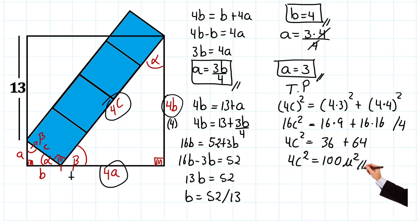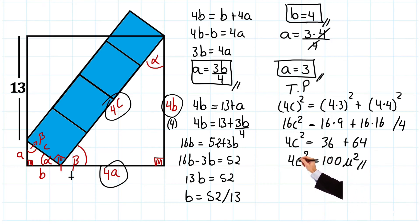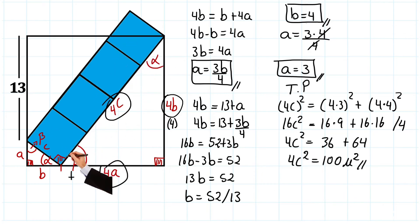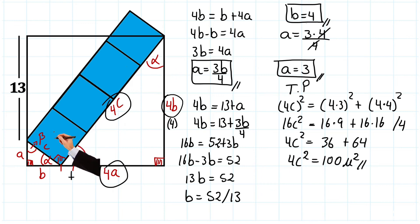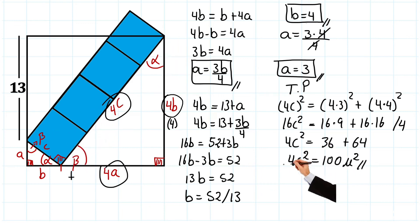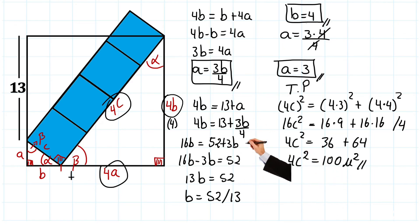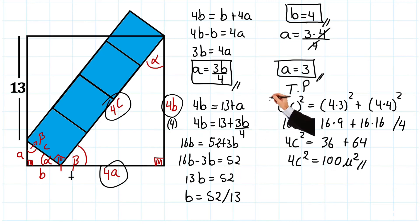This is already the solution to our exercise! Notice that what we wanted to find was the area of these four squares. Since their side is c, each square has an area of c squared, and since there are four squares it would be 4c squared — which equals 100 square units. Checkmate! If you liked the video, don't forget to subscribe and give it a like. See you in another class, bye bye!